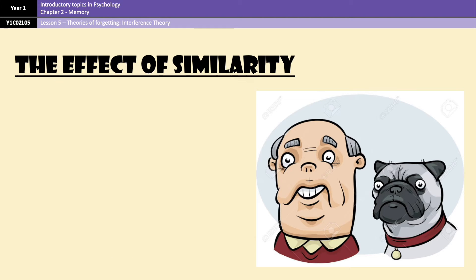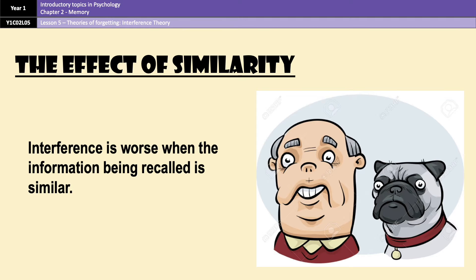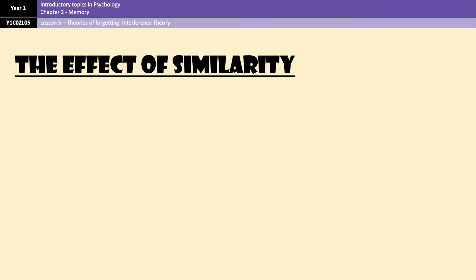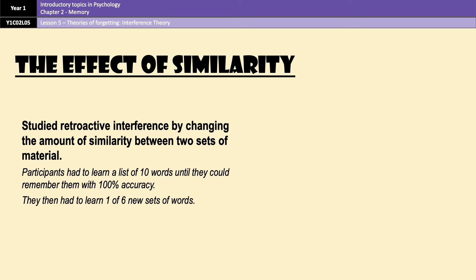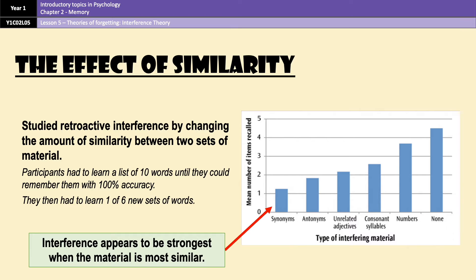There's a piece of research conducted by McGeoch and McDonald in 1931 that investigated interference. It found that the effects of interference are most prominent when two pieces of information are similar. Participants learned a list of 10 words to 100% accuracy, then were split into six groups, each given a different new list to learn. All participants were then asked to recall the initial list again. The findings clearly show that the more similar the two pieces of information, the more likely interference occurred when recalling the initial list.